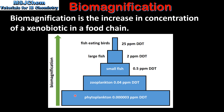Here we have an example of a food chain. We have a producer which is the phytoplankton at the bottom and the top predator which are the fish eating birds. If we look at the concentration of DDT, which is a xenobiotic, we can see that the concentration is increasing as we go up the food chain.